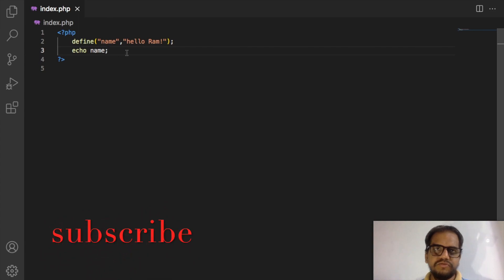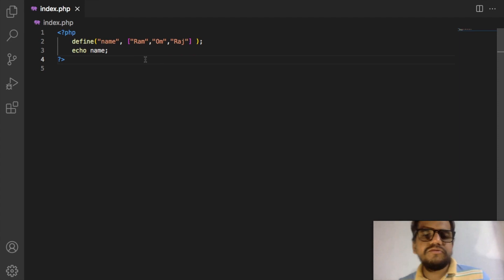So we can use an array. We can take one array also. I'll remove this one and write down here array. In this array we can take like Ram, second is Om, and third is Raj, so simple. Now we can use the key as one, so maybe output is Om.